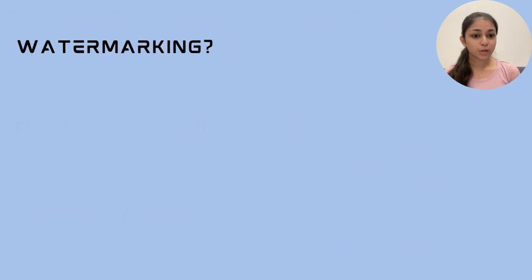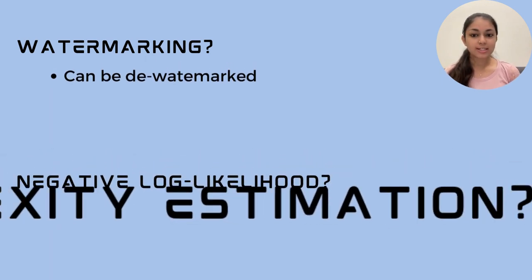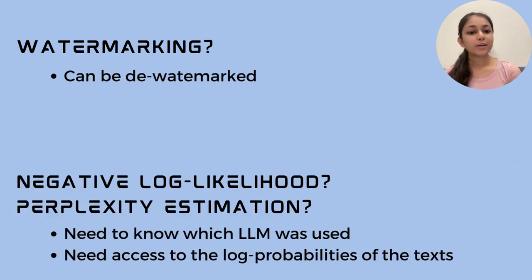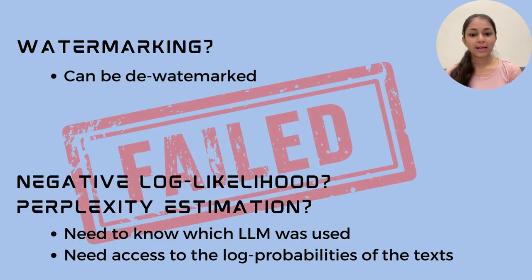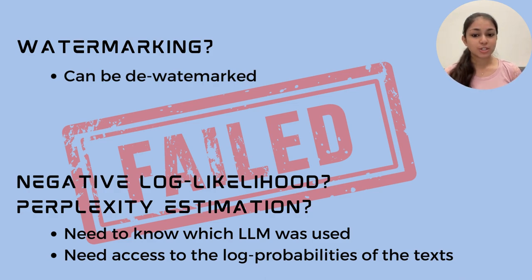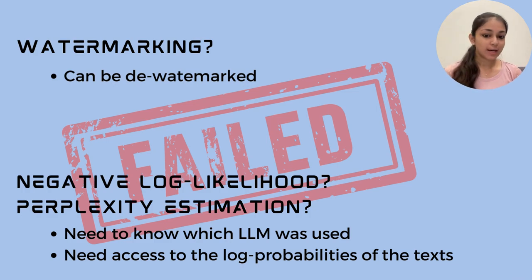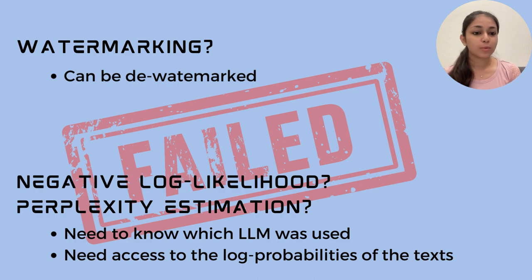In our work, we show how each of these three techniques are vulnerable. Watermarked tokens can be de-watermarked, and the models that work on negative log likelihood and perplexity estimation come with the challenges that you need to know exactly which LLM was used to generate the text, and you need access to the log probabilities of the text being generated.